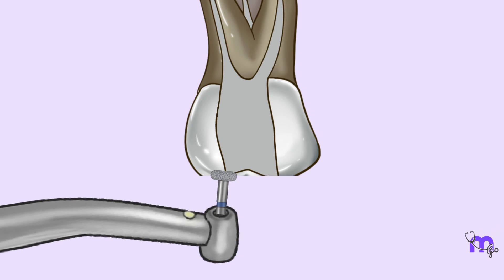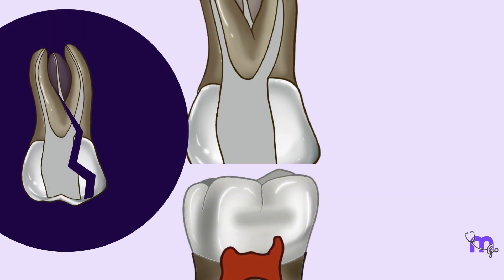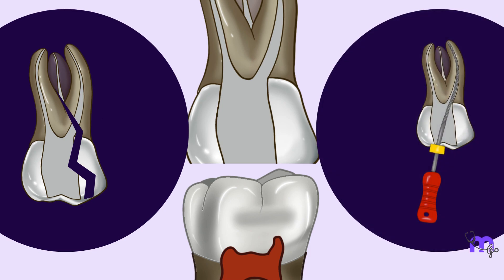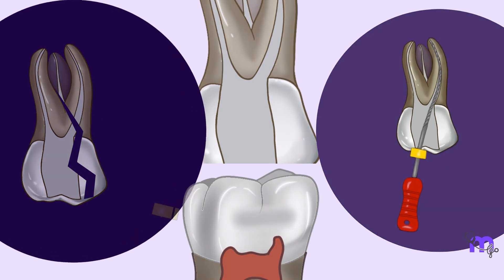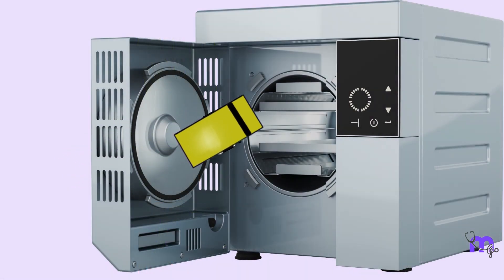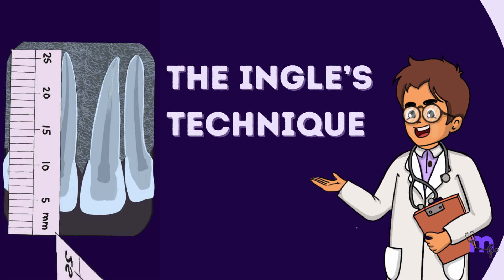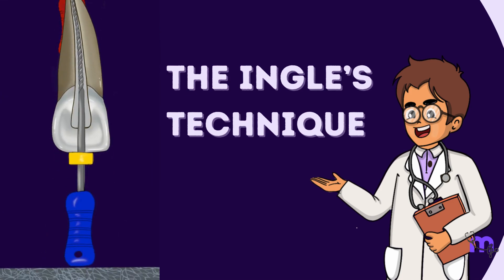At times we reduce the tooth out of occlusion to prevent trauma or tooth fracture mid-treatment. This occlusal reduction should be done before we finalize the working length so that there is no discrepancy once we start with the cleaning and shaping. Fourthly, the silicone stopper in the file should be set according to the reference point to maintain the correct working length. These stoppers are autoclavable, so you don't need to remove them from files before autoclaving.